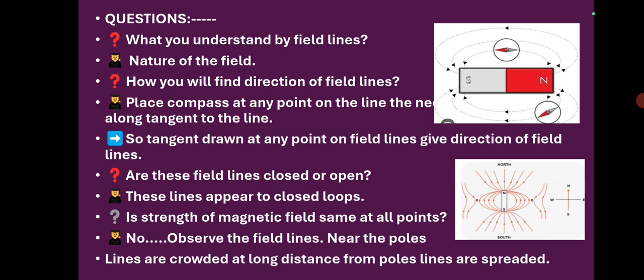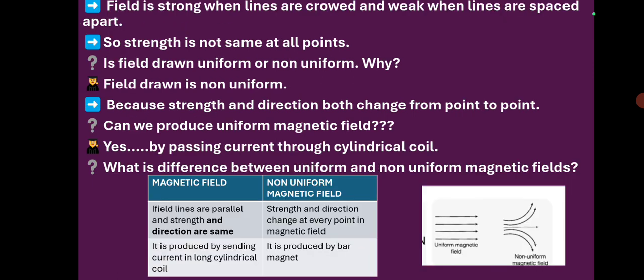Are these field lines closed or open? Actually, we cannot say exactly because externally we are finding closed loops, but internally no one knows the alignment of field lines. So we say lines appear to be closed loops. Is the strength of field the same at all points? No. Near the poles the lines are crowded, and as you go away from the poles the lines are spread apart. So field is strong when lines are crowded and weak when lines are spaced apart.